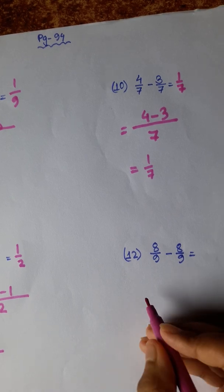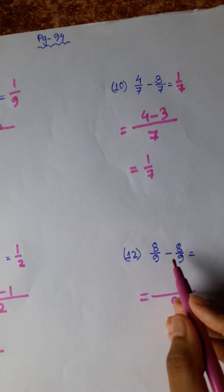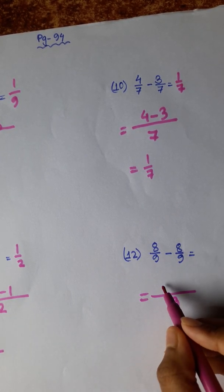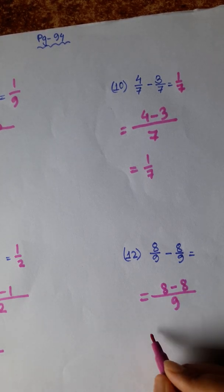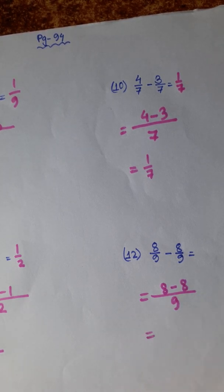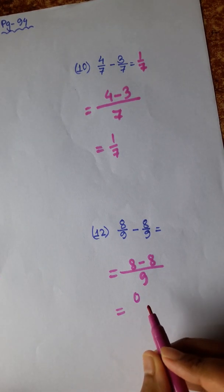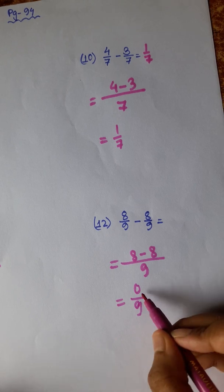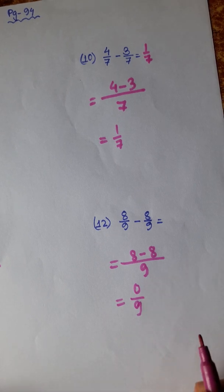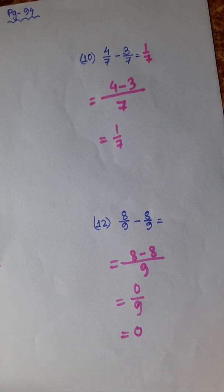Then: 8 by 9 minus 8 by 9 — 8 minus 8 is 0, so 0 by 9. When the numerator is 0, the whole answer is 0. So the answer is 0.